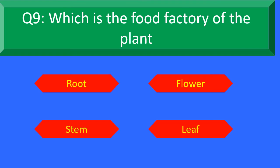Which is the food factory of the plant? Option A: Root, Option B: Flower, Option C: Stem, and Option D: Leaf. Your time starts now.